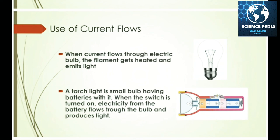A torch light is a small bulb with batteries. When the battery is turned on, electricity from the battery flows through the bulb and produces light.